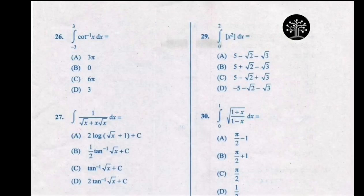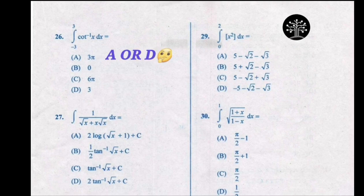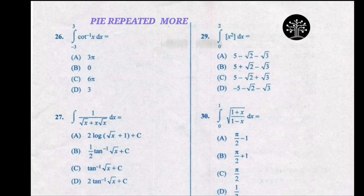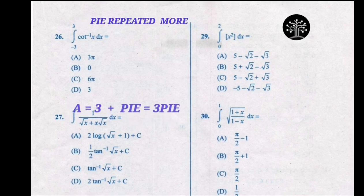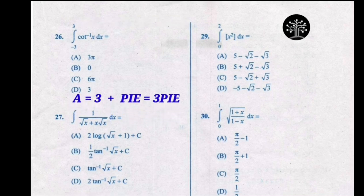In this question, the probability of the correct option being option A or option D — both are having a similar start and both share the common number 3. Now to decide the correct answer, we take the help of other options. The term pi has repeated more, and option A has got both the number 3 and the term pi, so therefore the correct answer will be option A.